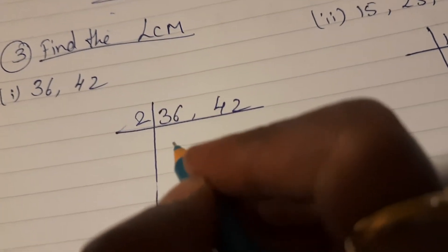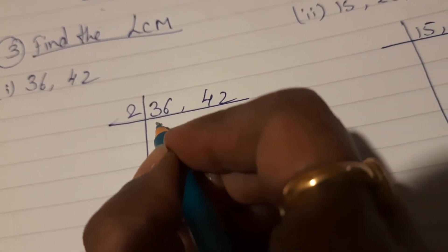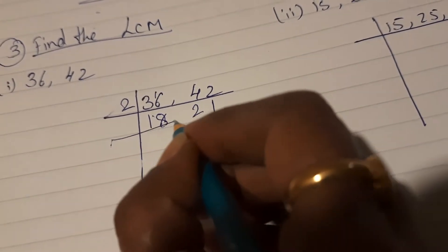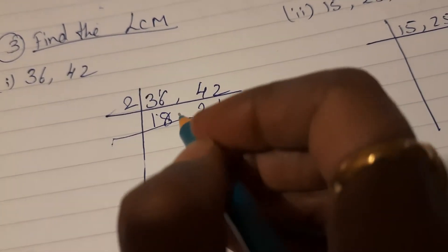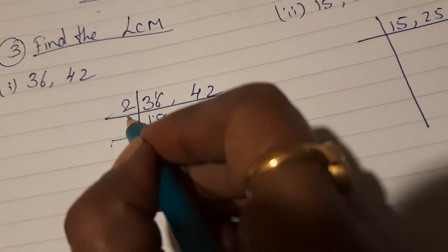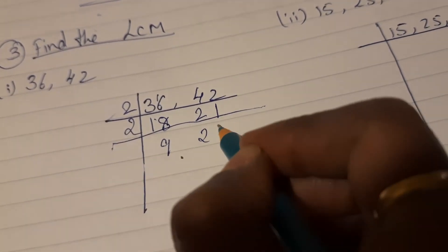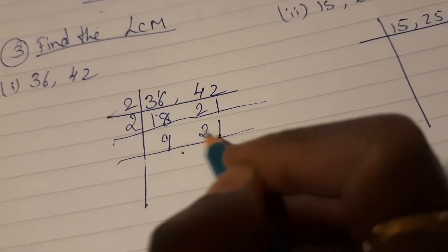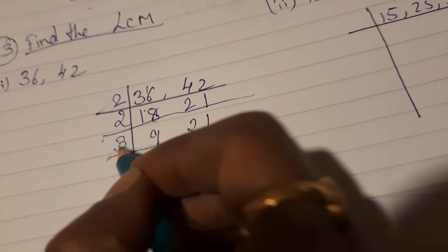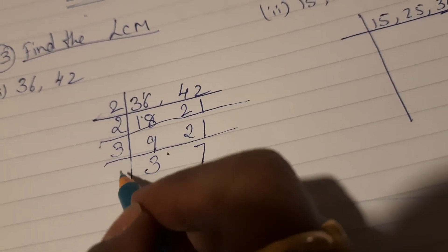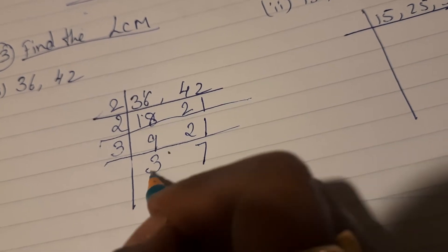36 and 42. We'll use a table. When we are finding out prime factors we use the small numbers first. 2 ones are 2, 2 eights are 16, 2 twos are 4, 2 ones are 2, 2 nines are 18. Let the 21 remain as it is. Now we can use 3. 3 threes are 9, 3 sevens are 21.